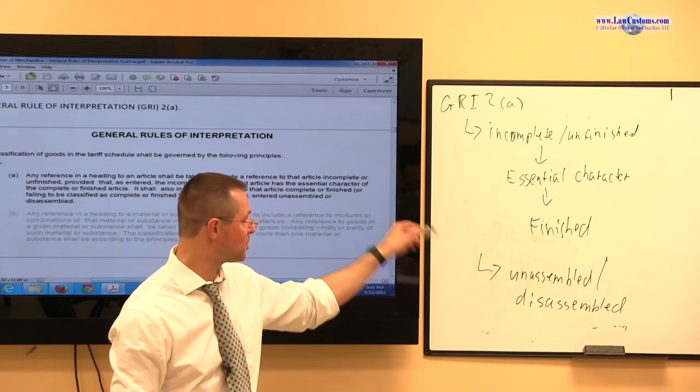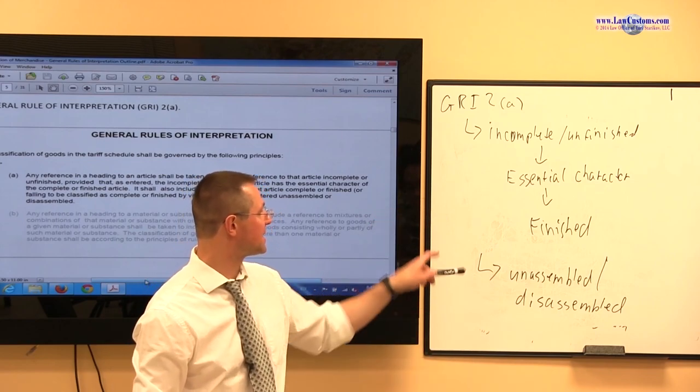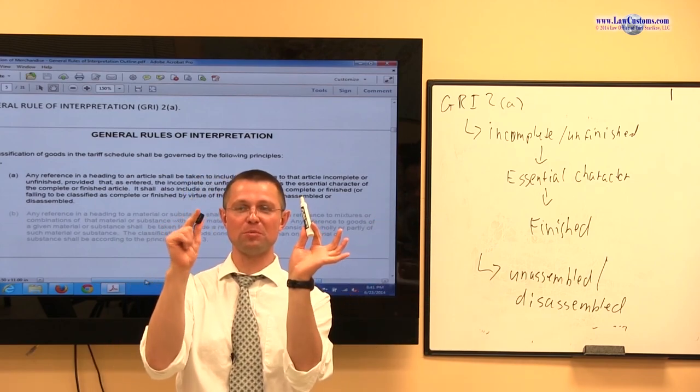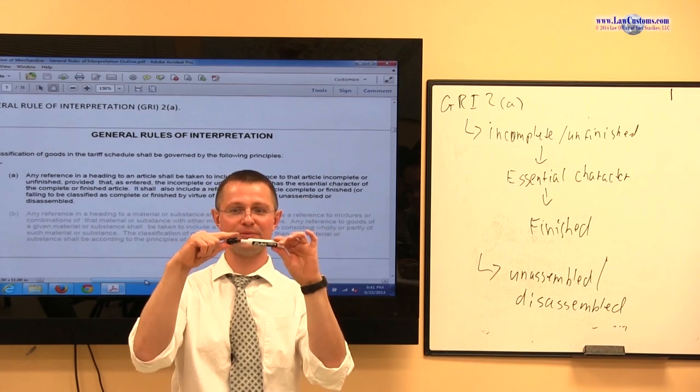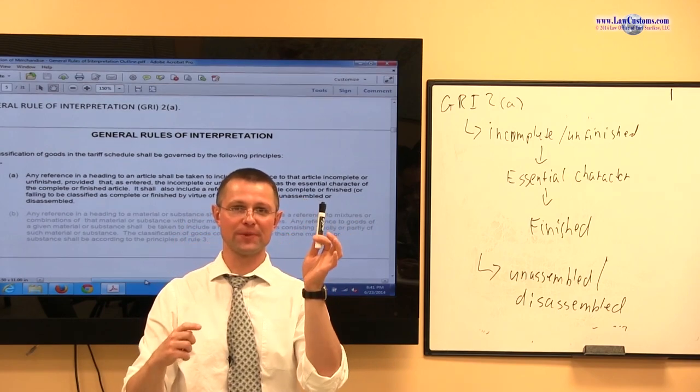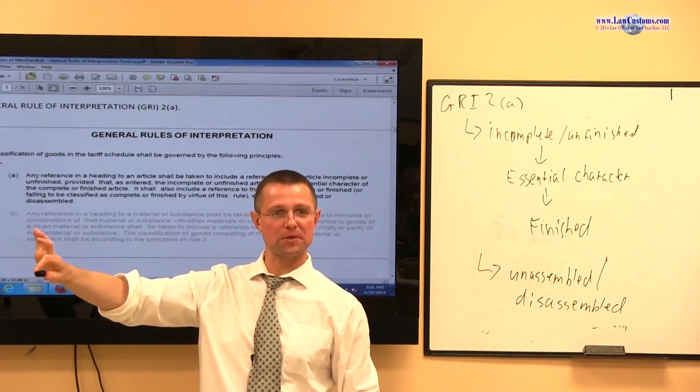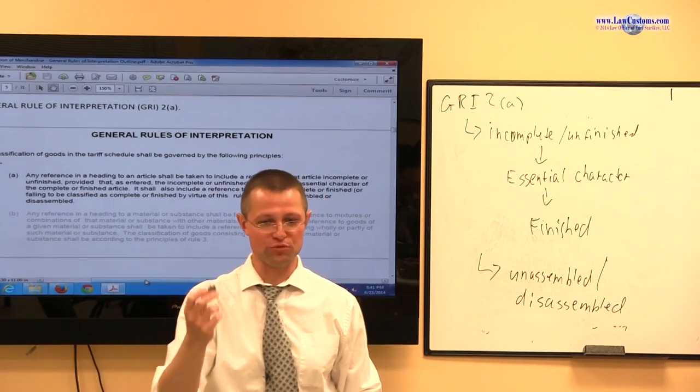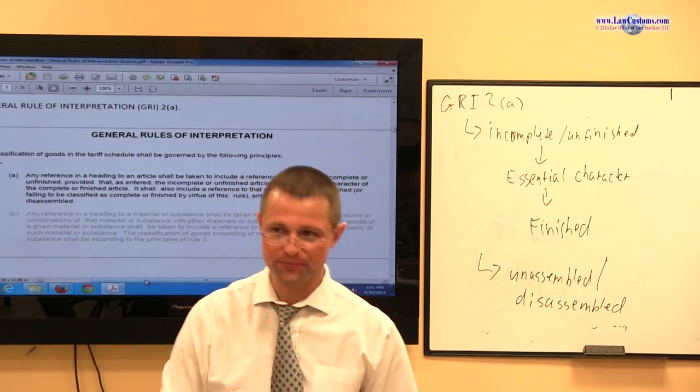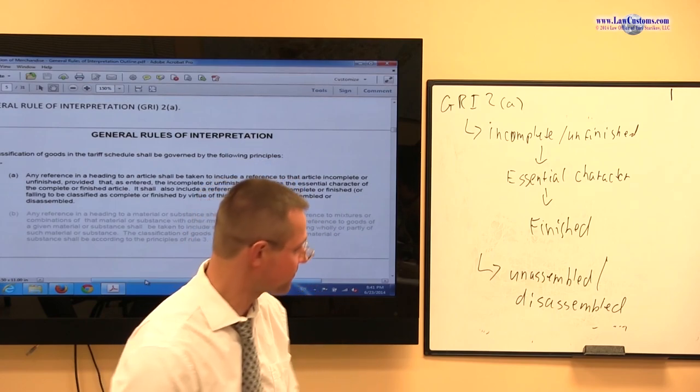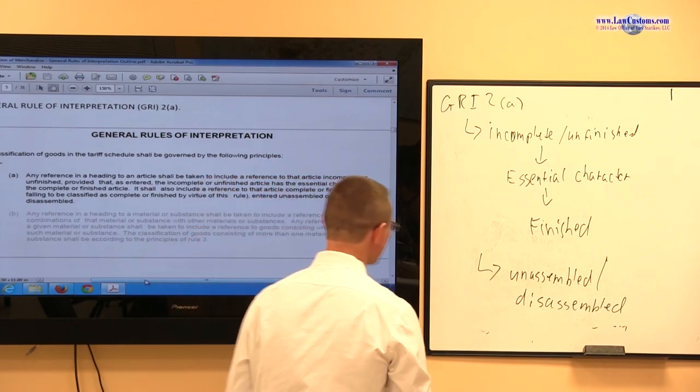So, under the GRI-2A provision, really, essential character is determined by only those two portions. And if this is extra, it has a separate classification and separate, of course, duty rate. Yeah? So, that's GRI-2.